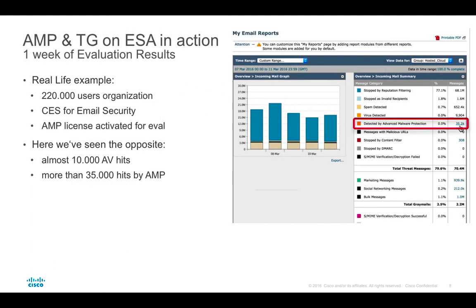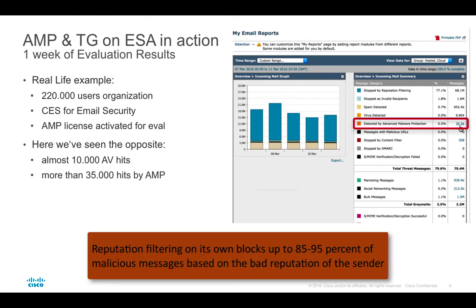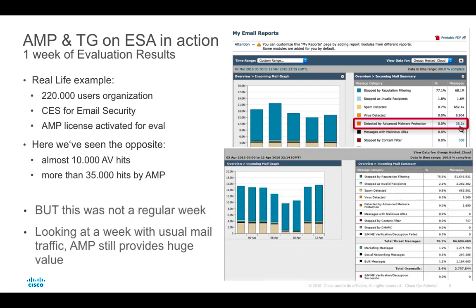We have reviewed the integration of Cisco email security solution — both email security appliance and cloud email security — with AMP and ThreatGrid. The value of the integration is easy to see from evaluation results: consider an organization with 220,000 email users where, within one week of evaluation, roughly 35,000 hits were detected by AMP and ThreatGrid. Those messages with malicious attachments were not stopped by sender reputation, anti-spam, or antivirus engines on ESA. Even if these results are a bit better than average, AMP and ThreatGrid integration with ESA still delivers huge value, especially when fighting advanced threats.